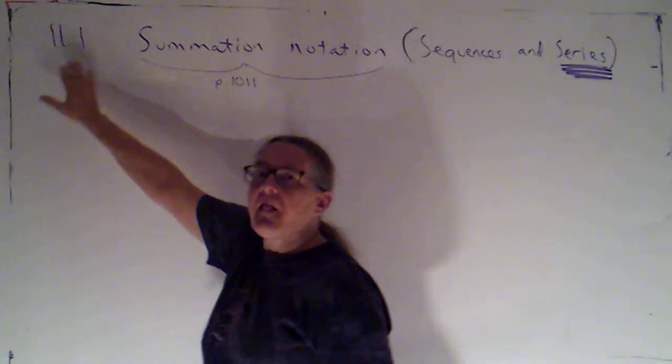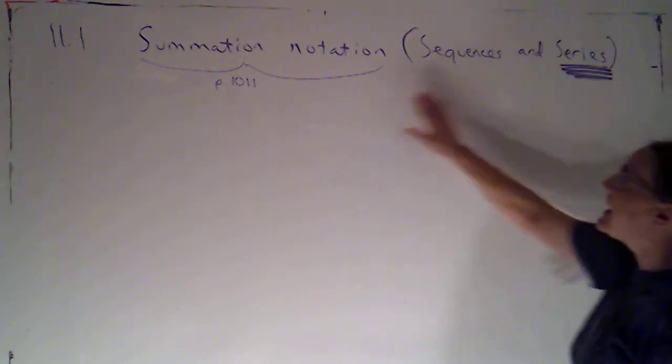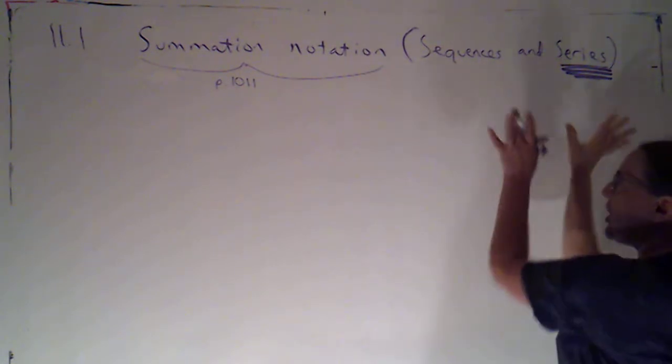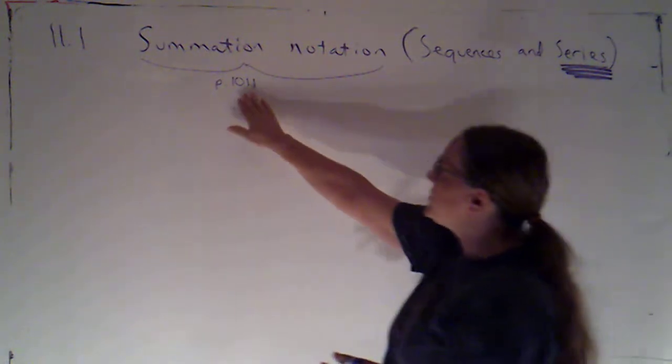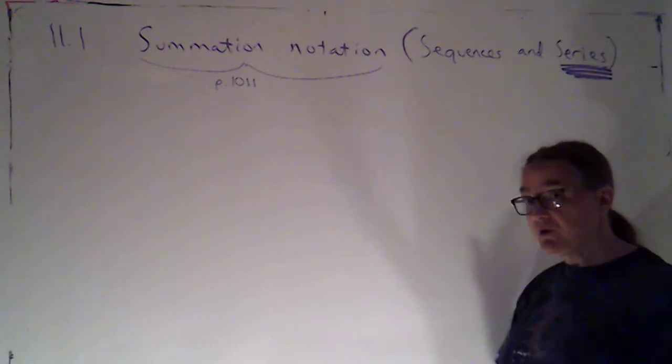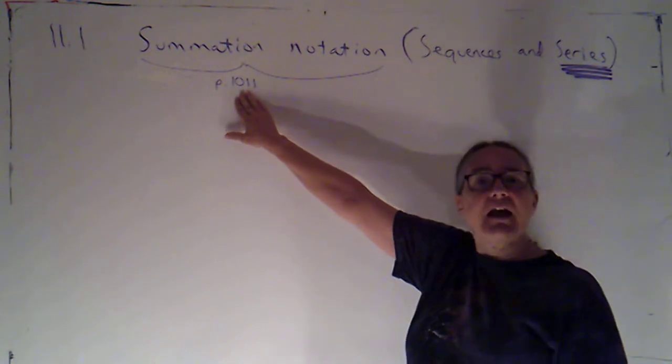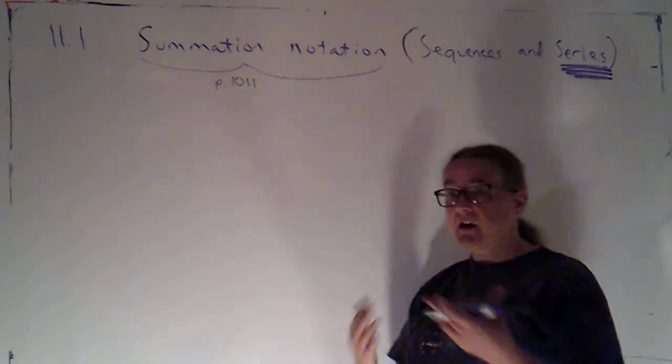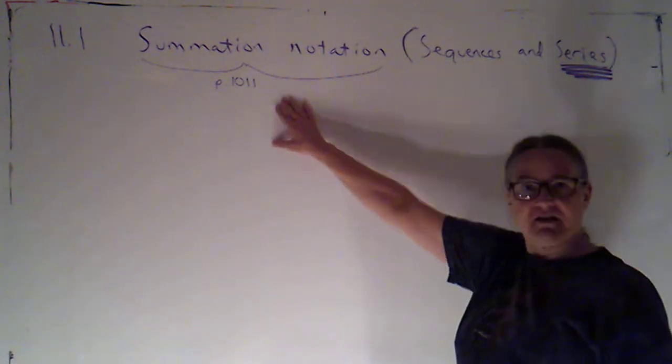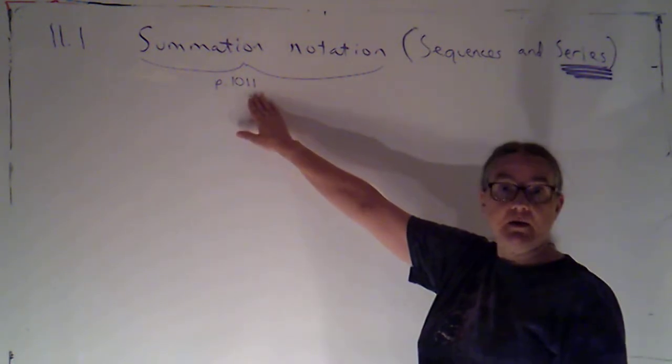In 11.1 the part that we're covering is summation notation. Now the title of the section is sequences and series. I've underlined series because that's what has to do with summation notation. I'll define what those are in a moment, but I am encouraging you to read your textbook. I think that's a really important skill for you to be developing as you work through your math career. The part on summation notation is on page 1011. That's not to discourage you from reading the entire section, but it's not necessary to read the entire section just to cover the material that you're responsible for this semester.